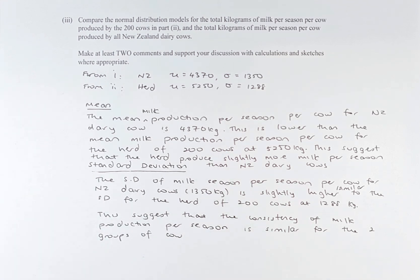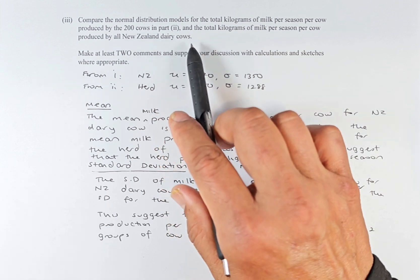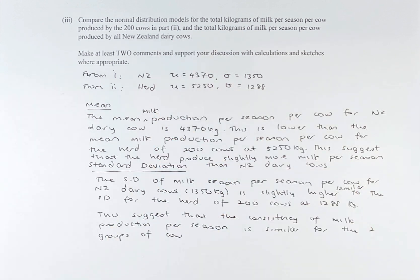let's read the question. Compare the normal distribution model for the total kilograms of milk per cow produced by 200 cows in part 1 and the total kilograms of milk per season per cow produced by all New Zealand dairy cows. The first one is part 2 and the second one is part 1. So we need to go back to the previous videos and we shall solve this.